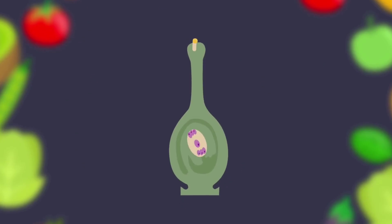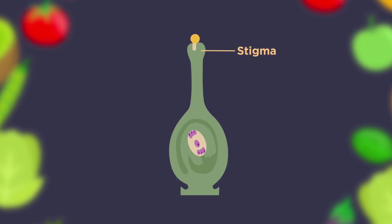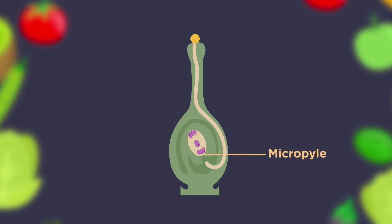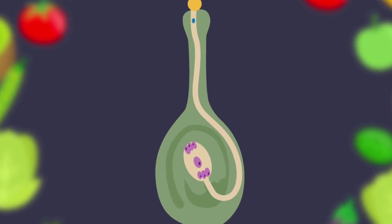Once the plant has been pollinated, fertilization can take place. Fertilization is the process of production of a seed. A mature pollen grain containing a sex cell lands on the female stigma of the same species. The pollen grain grows a pollen tube that goes down the female style to the ovary, where it enters through an opening known as the micropyle.